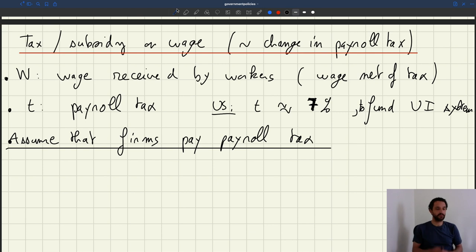In the US it's actually split—half is paid by firms, half is paid by workers. But let's assume that firms pay it. We can say that we're going to focus on the portion paid by firms, and then we're going to see what the effect of that tax paid by firms on the labor market is. So if you have a payroll tax that's paid by firms, and the wage that workers receive is W, what is the wage that firms have to pay so that the workers receive W?